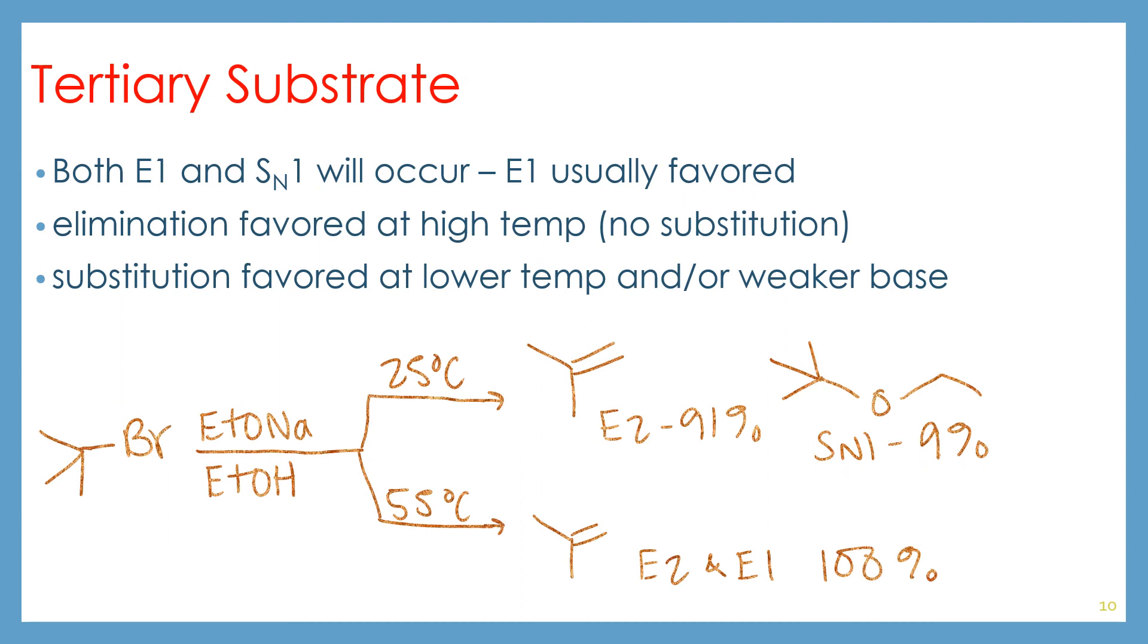If we have a tertiary substrate, SN2 is no longer possible. Both E1 and SN1 will occur. E1 is usually favored. Remember that elimination is favored at high temperature, so no substitution will occur in that situation. And then if you have a lower temperature, you have a better chance of seeing some substitution. So notice here that at room temperature, we still see 91% elimination because we are reacting with a stronger base here. This is not just ethanol. And so we can just extract a proton and kick out the bromine to get our elimination product. We will also see a little bit of the substitution product formed through SN1.